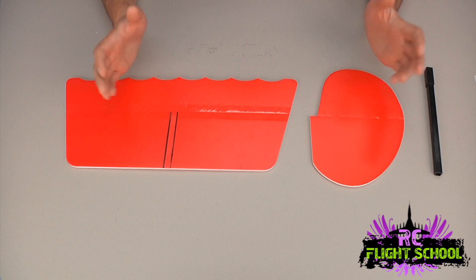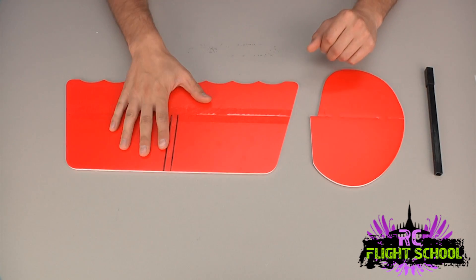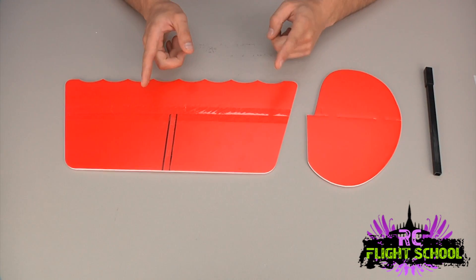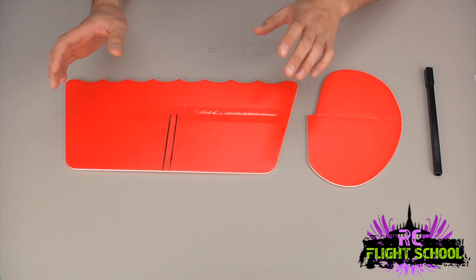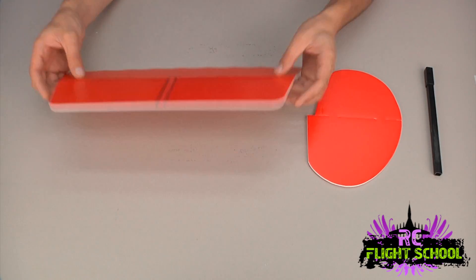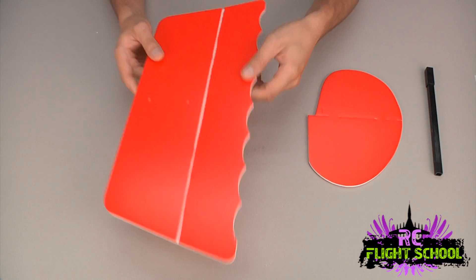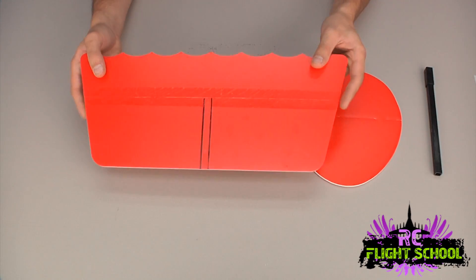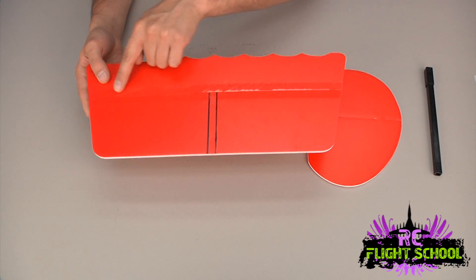All right guys, so here I have the tail pieces laid out in front of me. The horizontal stabilizer and the vertical, or elevator and rudder if you will. The first step that they recommend you do is to hinge the elevator and rudder and to cut out the relief for the bottom. So let me show you what they mean by that. You can see I've already applied the tape, the hinge tape that's supplied.